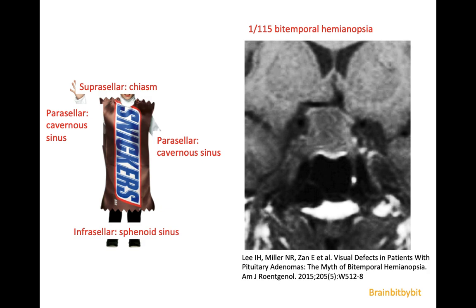A macroadenoma can extend suprasellar with compression of the chiasm, and in most medical books it says that this leads to a bitemporal hemianopsia. There was a very nice article in the AJNR 2015 where they evaluated the visual fields in 115 patients with macroadenomas, and only one of them had bitemporal hemianopsia. So the visual field defects are not pathognomonic, and there's also involvement of pre-chiasmatic optic nerves or post-chiasmatic optic tracts.